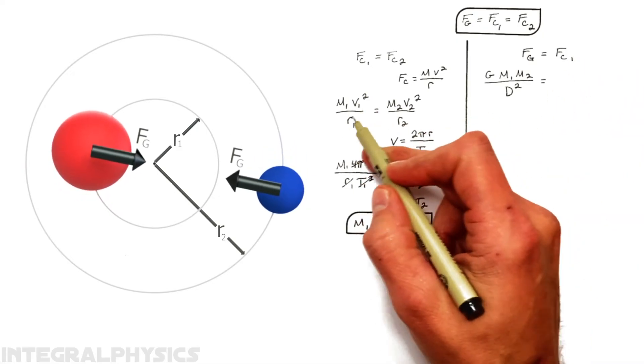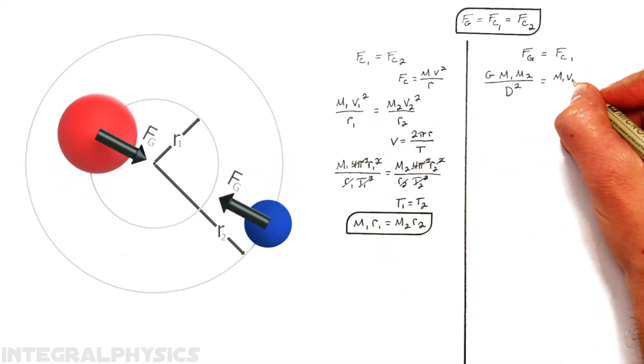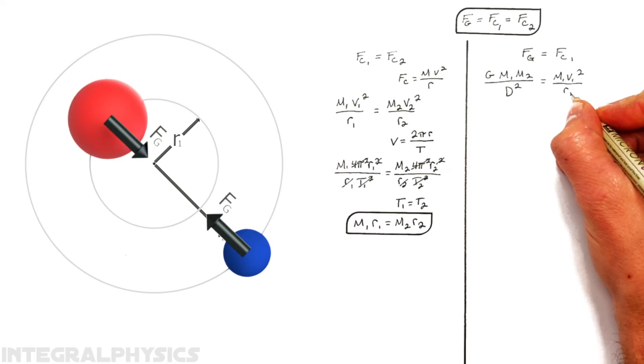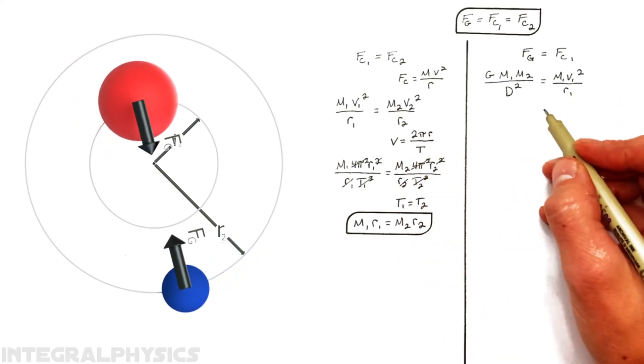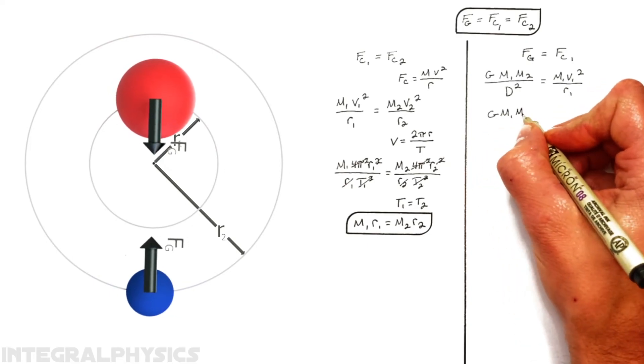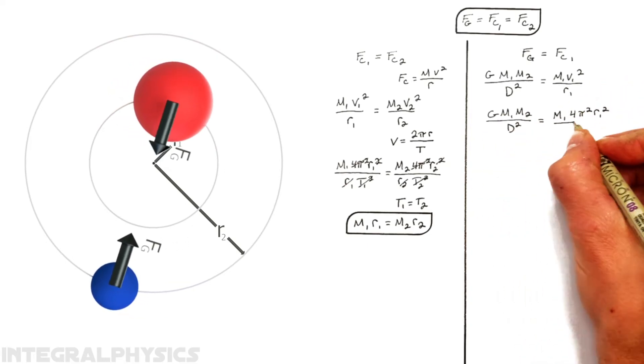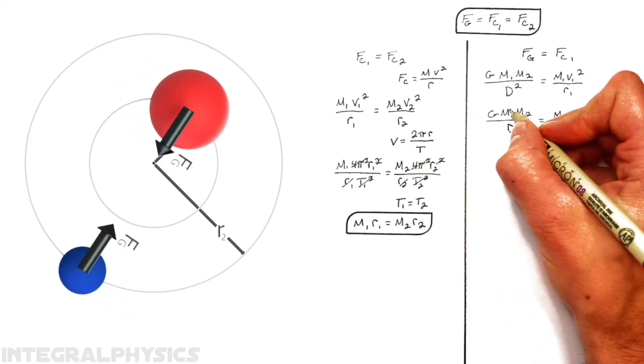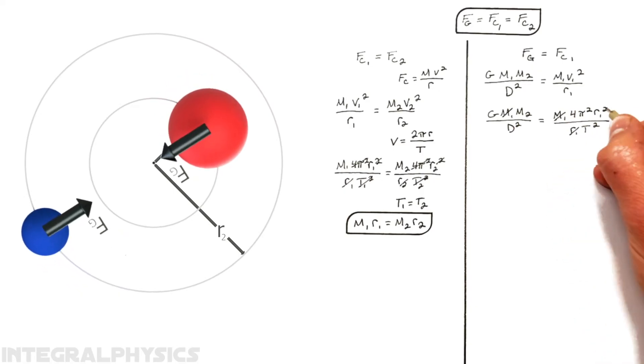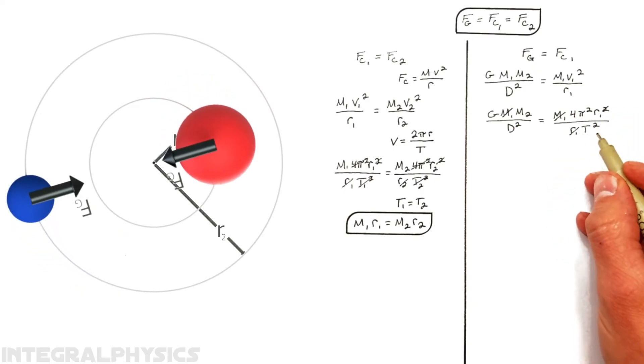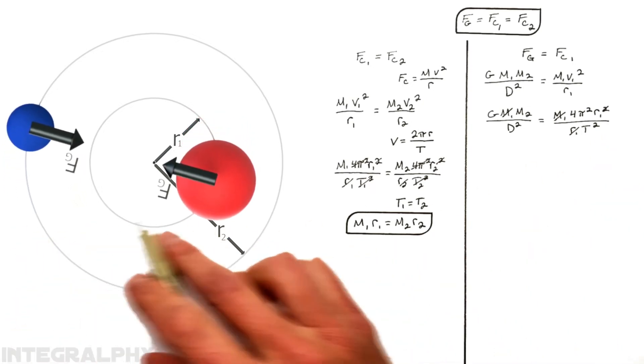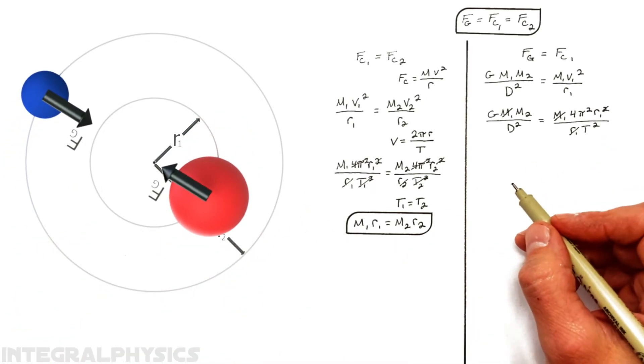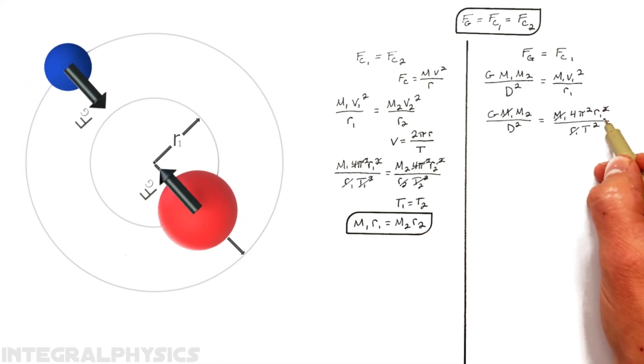Now, centripetal force is going to be no different than what we saw over here, mv squared over r. And just like we did over here relating velocity to period, we're going to do the same thing over here. And again, we'll see a few things cancel out. The m1 cancels out and r1 partially cancels out. Now, remember, we're trying to relate the two masses to the distance between them and their period. That means we need to get rid of this r1 value right here.